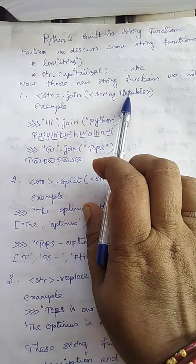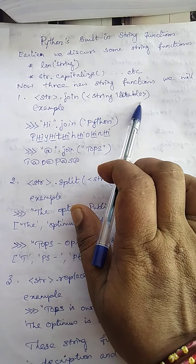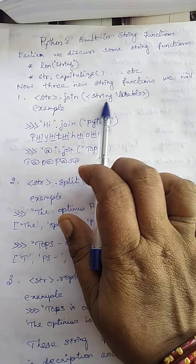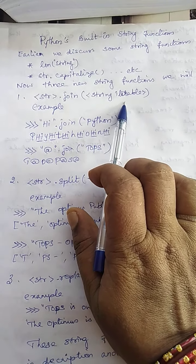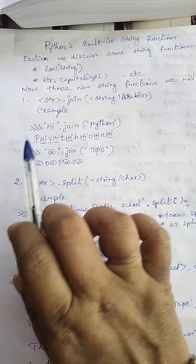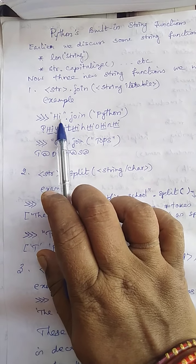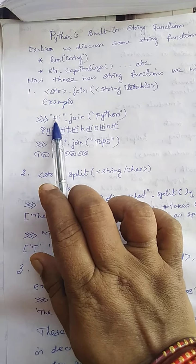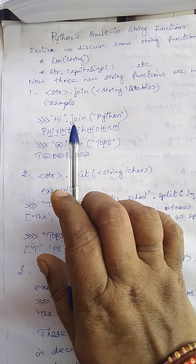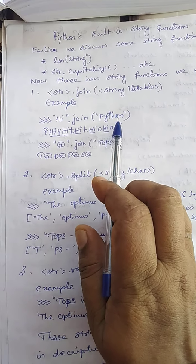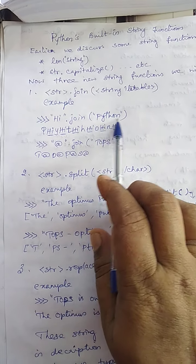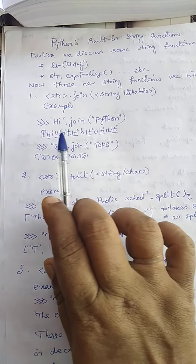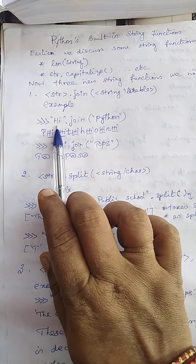This string is iterable — that means continuous characters, not a single one. String iterable refers to more than one character. See the example: here 'hi' — H, I — is a string constant, dot join of 'python'. 'Python' is an iterable string. Now each character of 'python' is going to be joined with this string 'hi'.